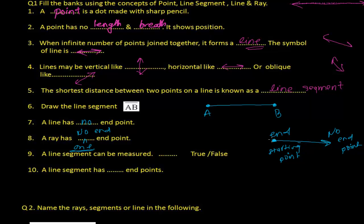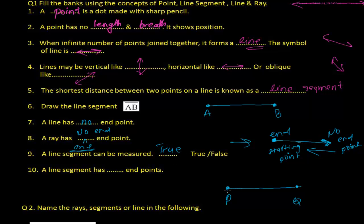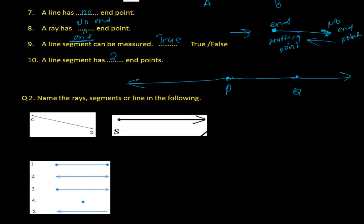A ray does not have an endpoint in the traditional sense — it doesn't end anywhere, but it starts at a point. If we consider the starting point as the endpoint, then a ray has one endpoint. A line segment can be measured — true. We can take a ruler and measure segment PQ easily. And a line segment has two endpoints.